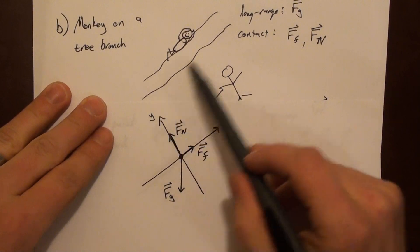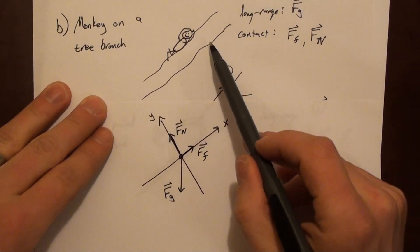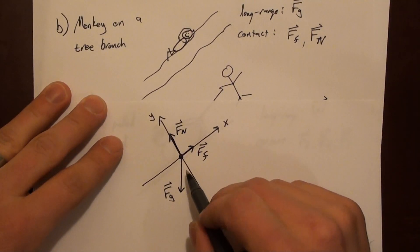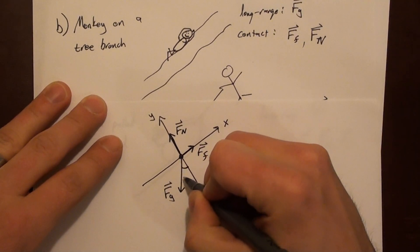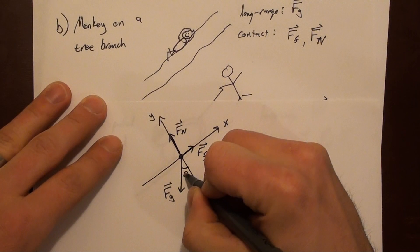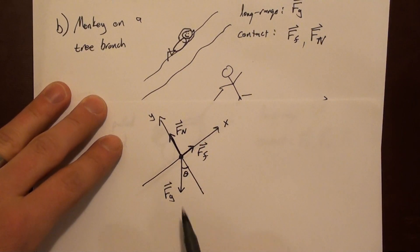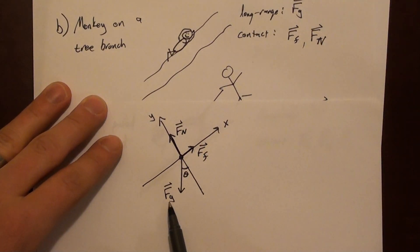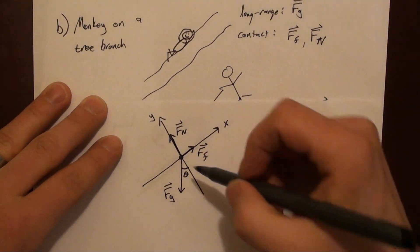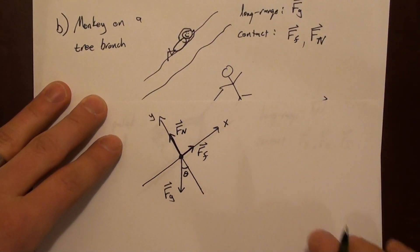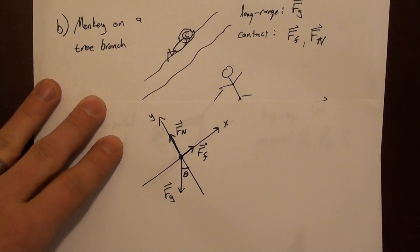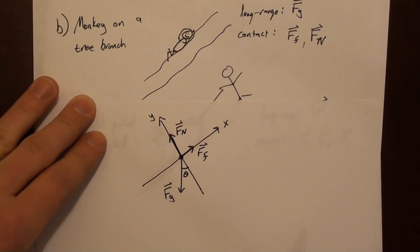This is our free body diagram for the monkey. If we had the angle of the incline we could include theta here, and then we can break gravity into x and y components — that would be the logical next step if solving a problem with this setup.